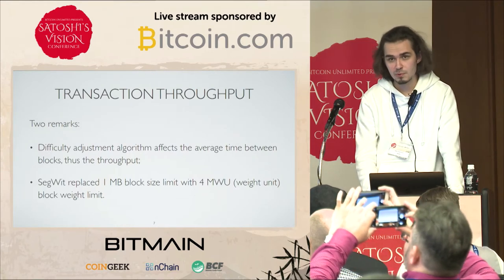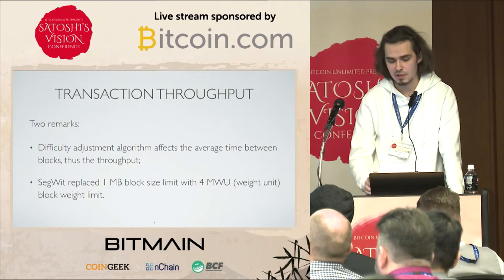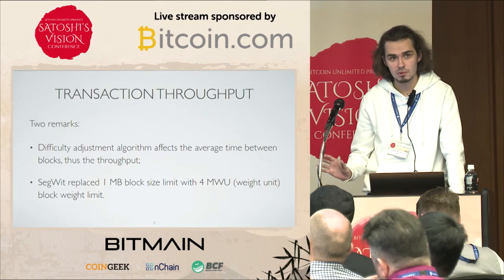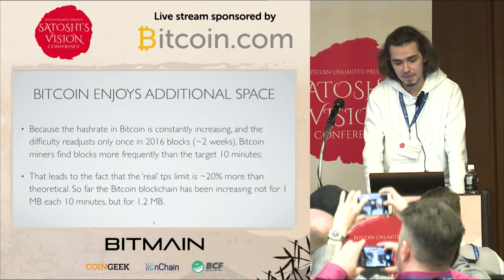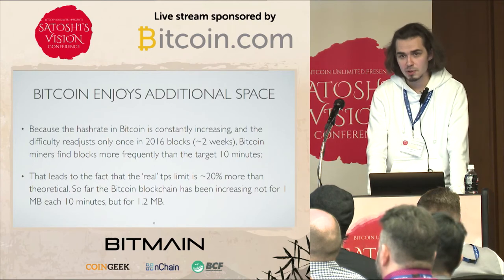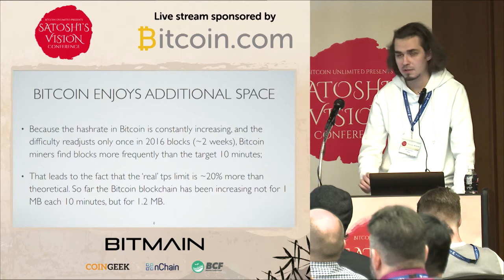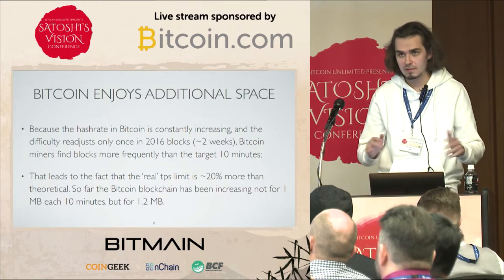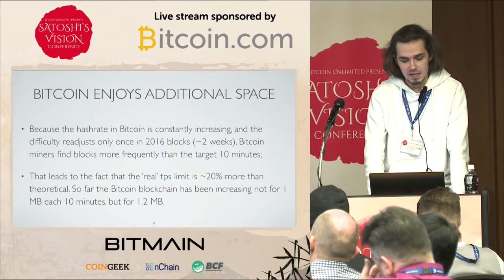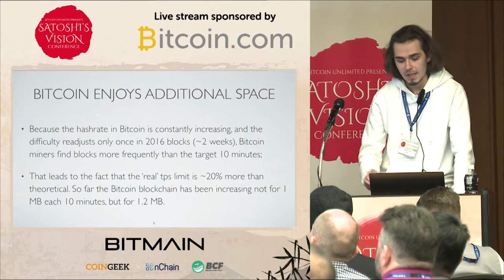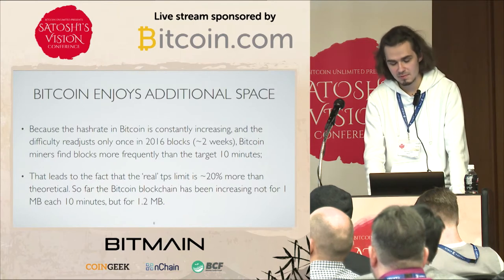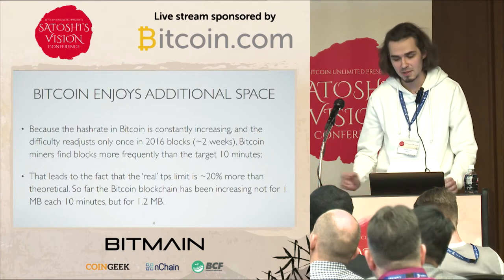Two small remarks: first, the difficulty adjustment algorithm also affects the average time between blocks and thus throughput. Because the hash rate in Bitcoin is constantly increasing and the difficulty adjusts only once in approximately two weeks, Bitcoin miners find blocks more frequently than the target 10 minutes. That leads to the real throughput limit being 20% more than theoretical — the Bitcoin blockchain has been growing not at one megabyte every 10 minutes but 1.2 megabytes. So when Luke Dash Jr. says let's increase the block size to 1.1 megabytes, well, we already have that.